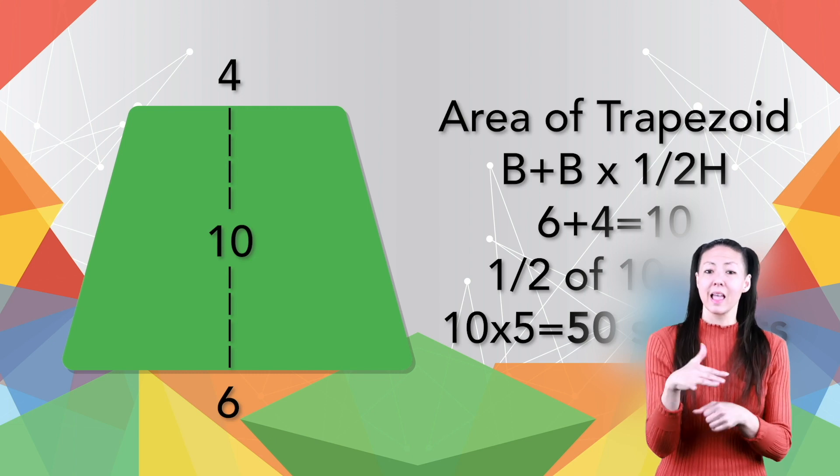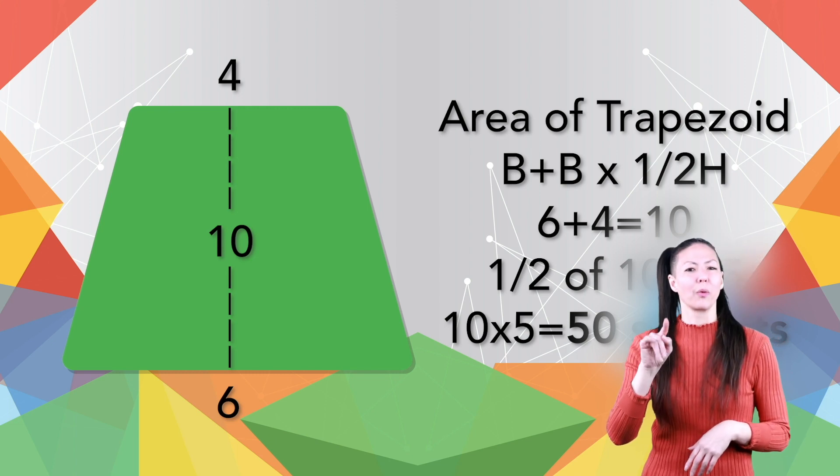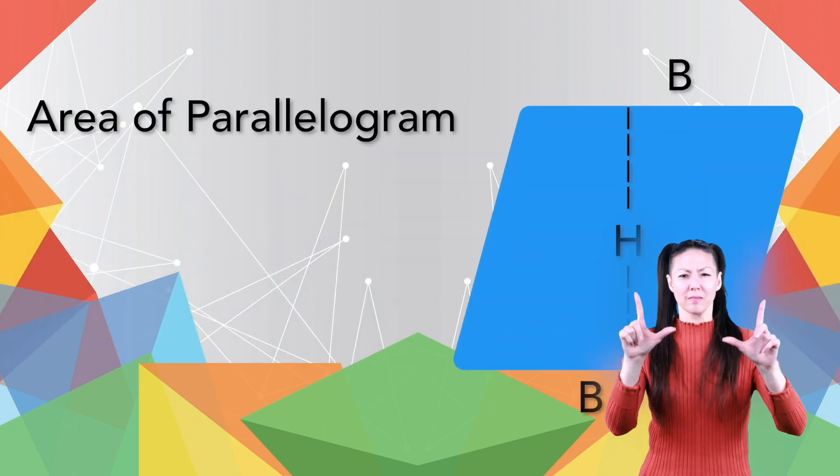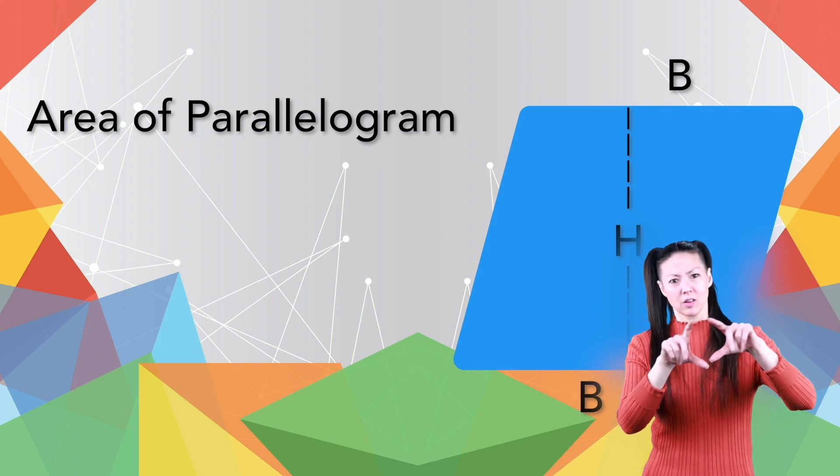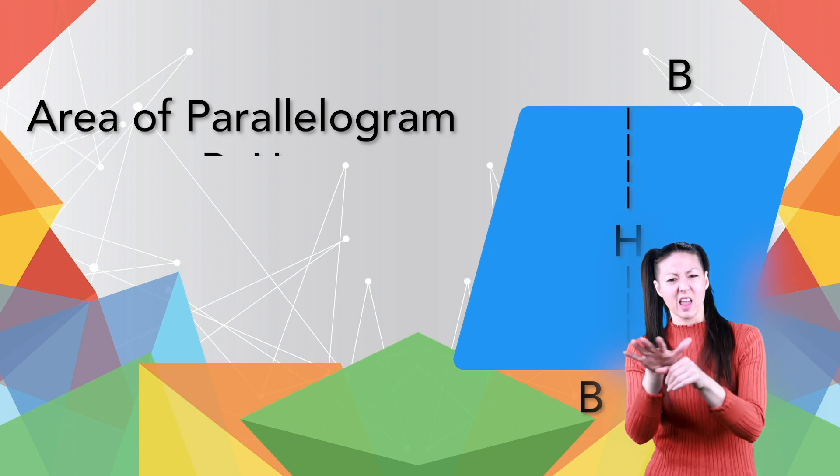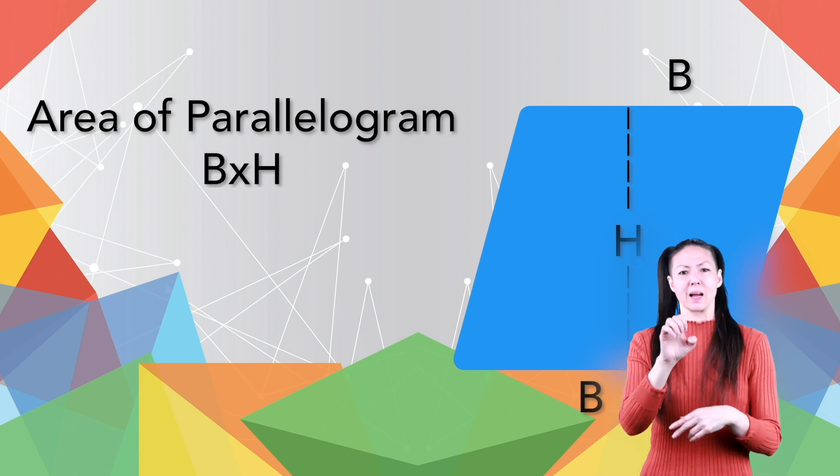Take a look at this parallelogram. Looks like a tilted rectangle, doesn't it? To calculate its area, you'll need to multiply its base times its height. This parallelogram's area is just eight times seven, or 56 square units.